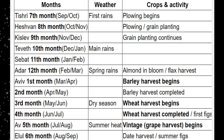After the church is caught up — here on the calendar — the barley harvest is completed. The church is caught up here. This is where the bride is caught up in the first month, where the former rain and the latter rain are together, and this is in the book of Joel.